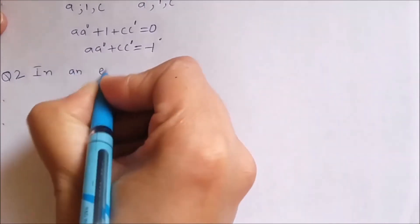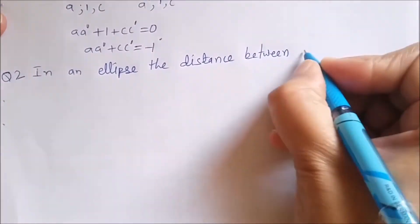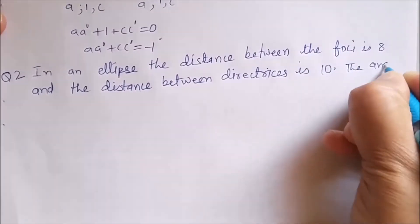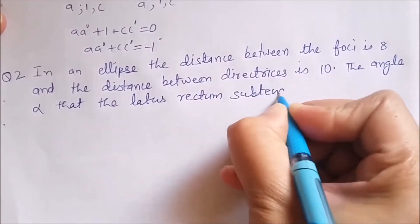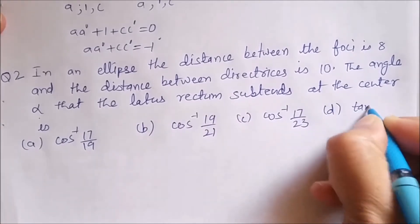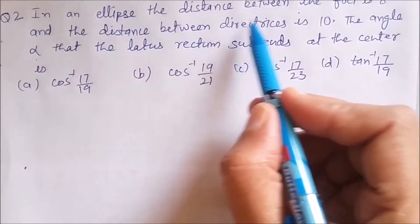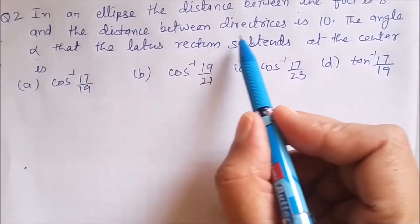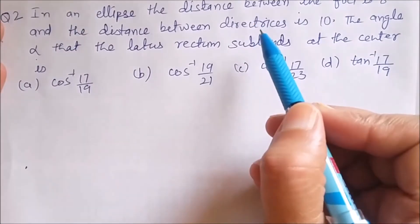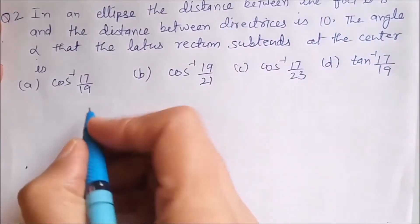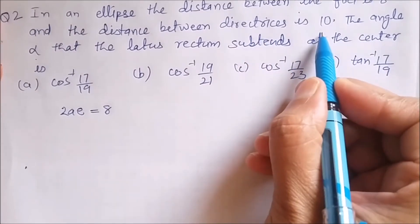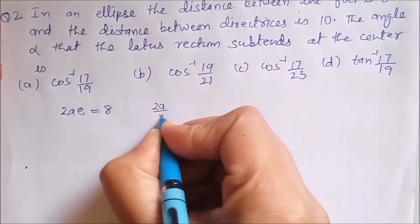Question number 2. In an ellipse, the distance between the foci is 8 and the distance between directrices is 10. The angle alpha that the latus rectum subtends at the center is. Now it is given that distance between the foci is 8. So we can write 2ae = 8 and distance between directrices is 10. So 2a/e = 10.